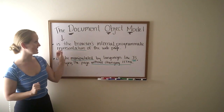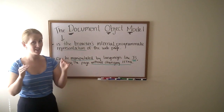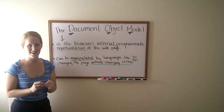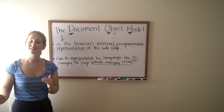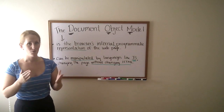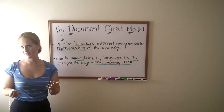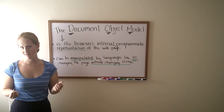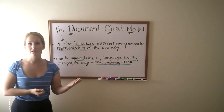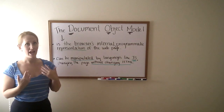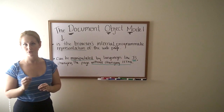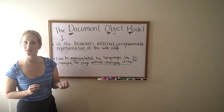The Document Object Model is the browser's internal programmatic representation of the web page. What that means is you can manipulate the Document Object Model and change the page without actually going in and changing any of the HTML. You have to use the right language like JavaScript or a library of JavaScript like jQuery to access and talk to the DOM, but it can be a really powerful tool, both as a programmer and as a user of websites.